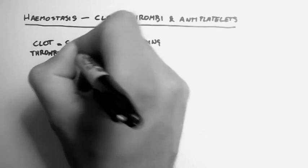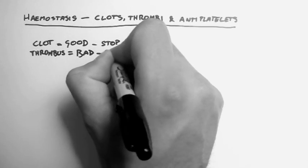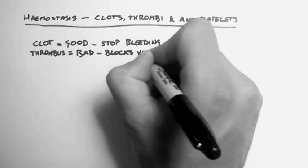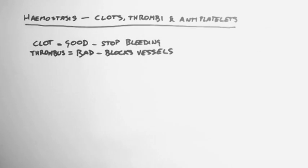A thrombus, on the other hand, is bad. It's also a clot, but it happens within a blood vessel, so it actually blocks the vessels.